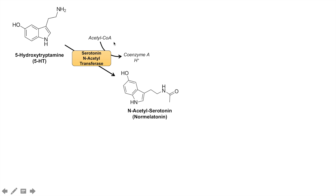Once we have serotonin (5-HT), it can be acted on by the enzyme serotonin N-acetyltransferase, which requires acetyl-CoA as a cofactor. This enzyme transfers an acetyl group from acetyl-CoA onto the nitrogen group of 5-hydroxytryptamine, leaving coenzyme A and a hydrogen ion as byproducts. This produces N-acetyl serotonin, also known as normelatonin. Acetyl-CoA acts as the acetyl group donor in this reaction.